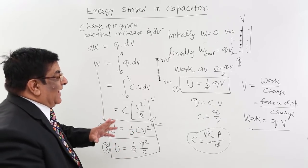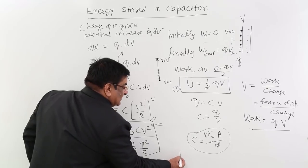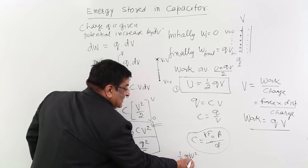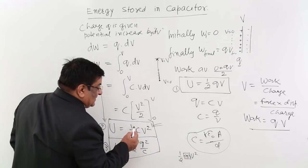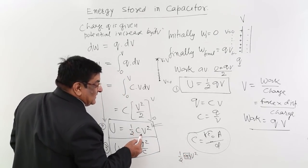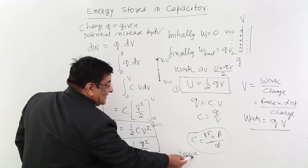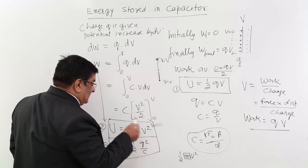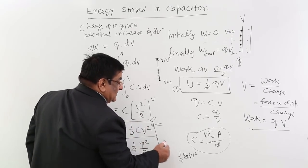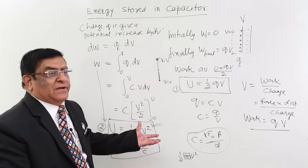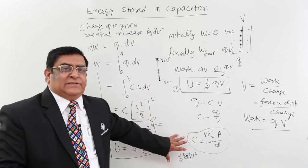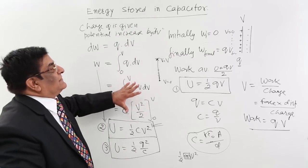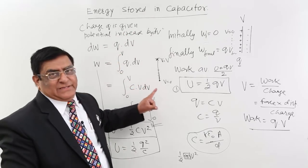Remember, in mechanics our formula for energy is half MV square. This is a constant known as inertia. V is velocity which increases, energy increases. V is voltage which increases, energy increases. So there is an analogy between the two and there will be so many quantities coming on the same formula, half. So this is energy in a capacitor.